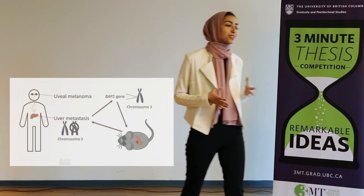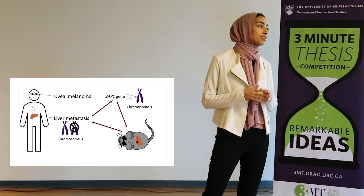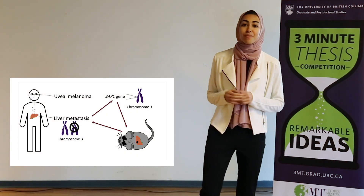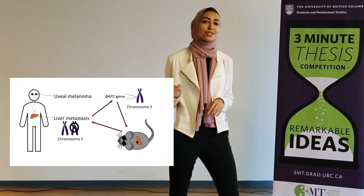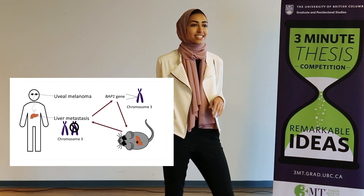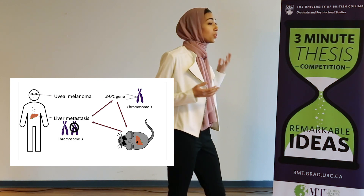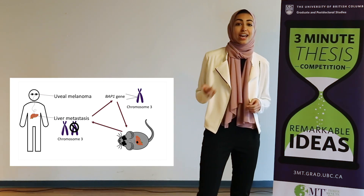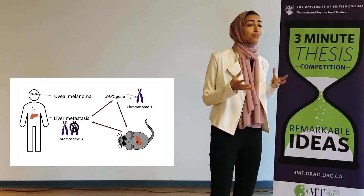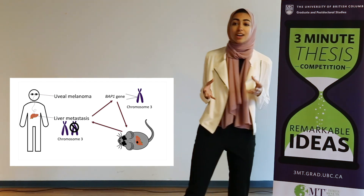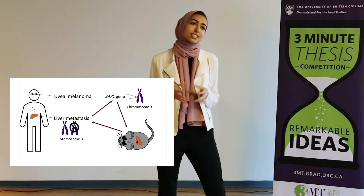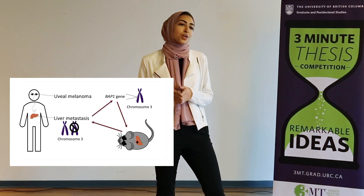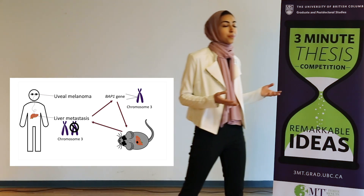Humans are unique in all sorts of ways, but one of our fascinating differences comes from these pigment-producing cells called melanocytes, which control the color of our skin, our hair, and our eyes. Certain factors can cause these melanocytes to divide uncontrollably, leading to a cancer known as melanoma.